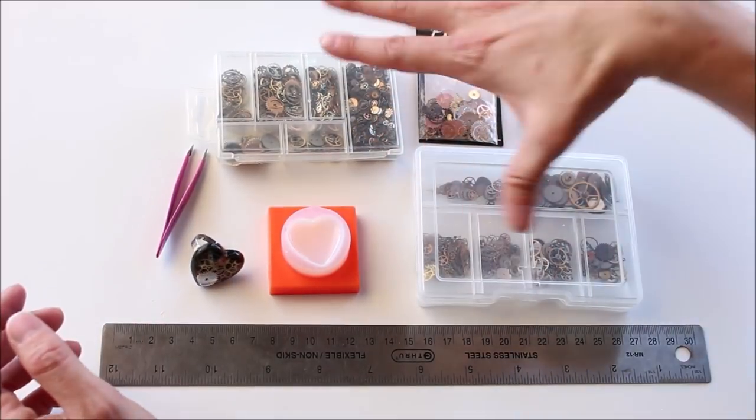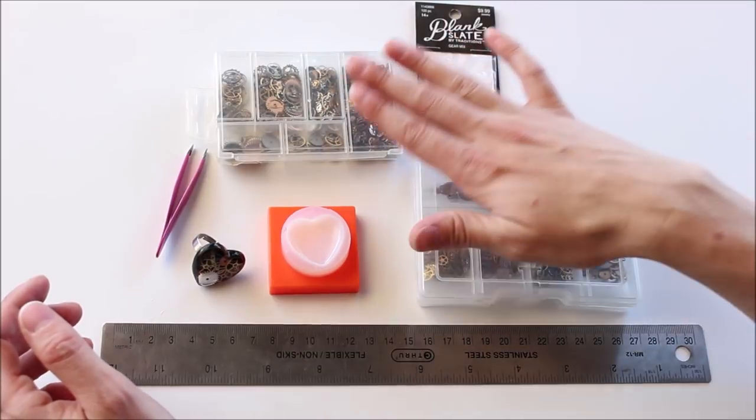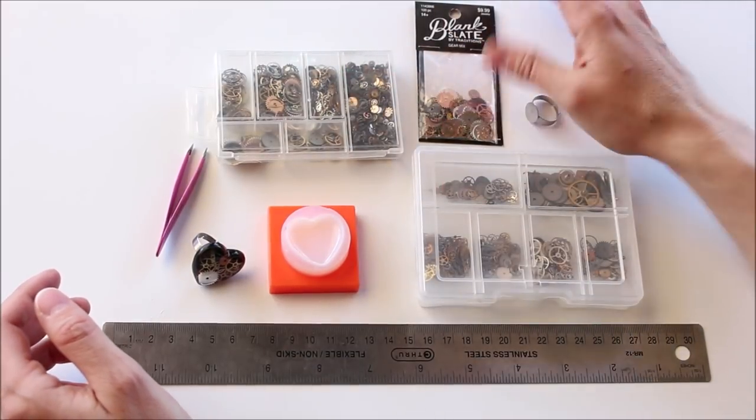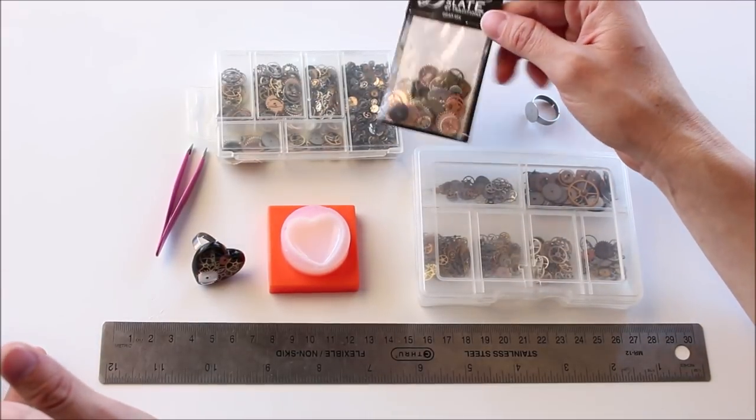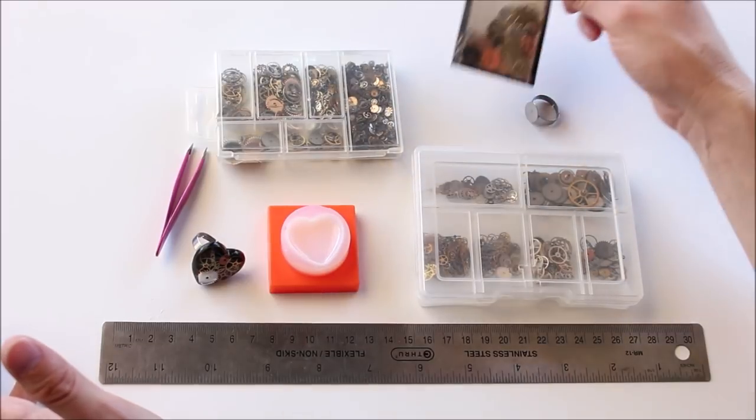You're also going to need your watch parts. These are actual watch parts that I got from Amazon, and these I got from Hobby Lobby, and they're charms, and they look a lot like watch parts, like they could pass for them for sure.